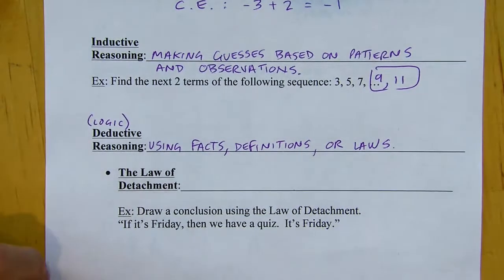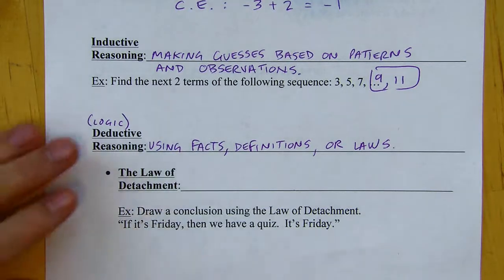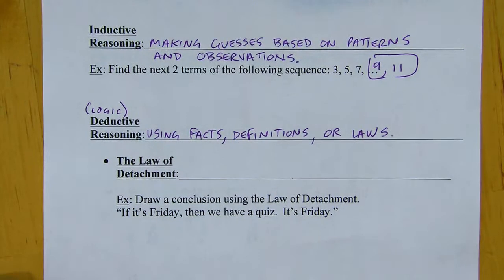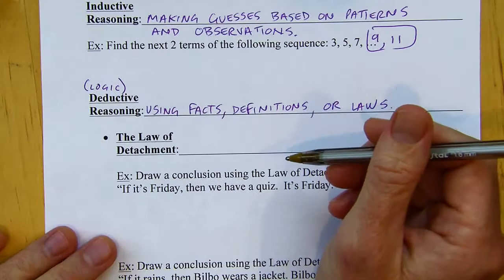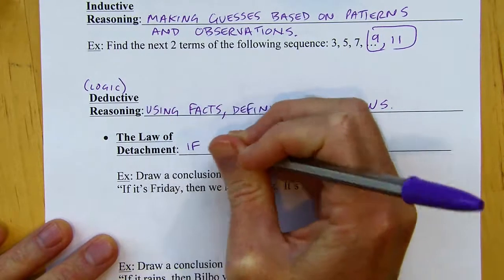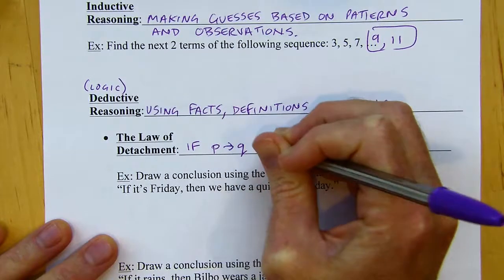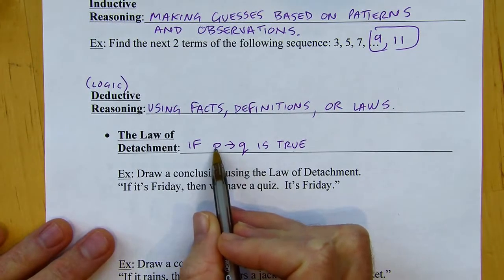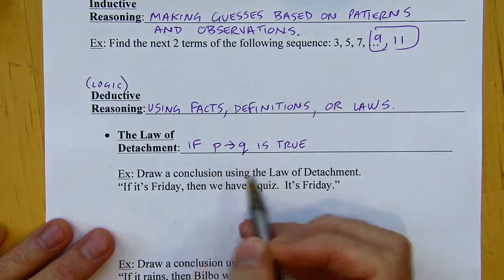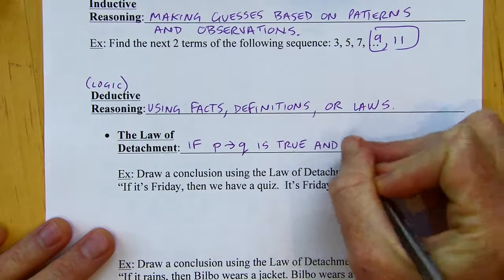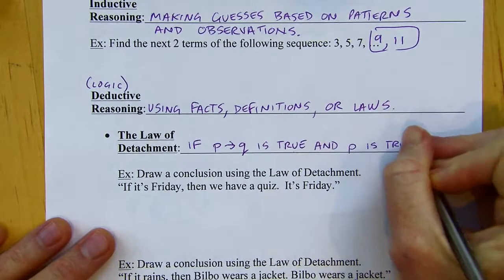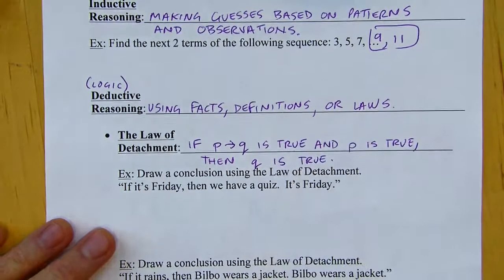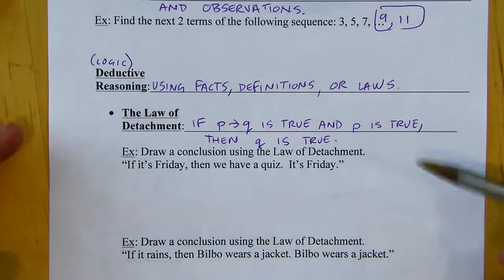Under deductive reasoning, there are two basic laws we're going to cover. The first is called the Law of Detachment. In symbolic form: if P→Q is true — that's a conditional where P is the hypothesis and Q is the conclusion — and if the hypothesis P is true, then the conclusion Q is true.